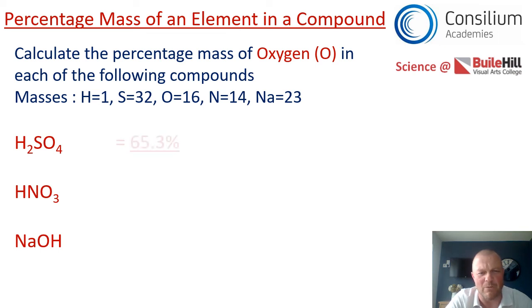OK, so H2SO4, the correct answer is 65.3%. For HNO3, the answer is 76.2%. And for NaOH, the answer is 40%. So as we can see on the screen, that HNO3 has the greatest percentage by mass of oxygen inside its compound.